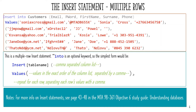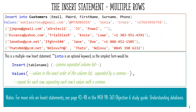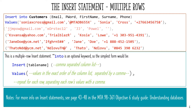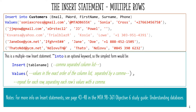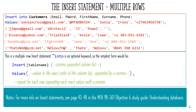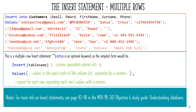The Multiple Row Insert Statement is similar to the Single Row Statement, up to the end of the first row of values in the Values list. Each row of values is then listed with a comma separating each row after the closing bracket. For more info on Insert Statements, visit page 43 to 48 in the Objective 6 Study Guide, Understanding Databases.